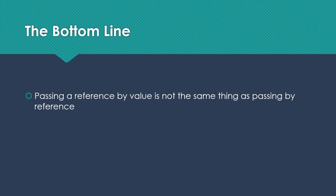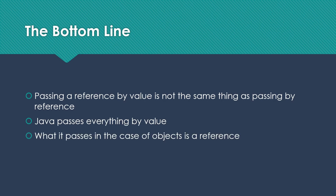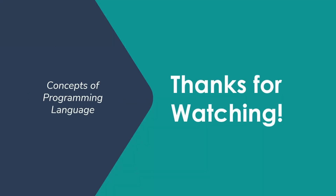The bottom line is that passing a reference by value, which is what Java is doing, is not the same as passing by reference. Java actually passes everything by value, but what it passes in the case of objects is a reference, and so we can find ourselves a little bit confused. But the behavior we're getting is exactly the same as when we do an assignment where we copy the reference from one variable to another, and either one of them can change the same object. I look forward to seeing you next time.